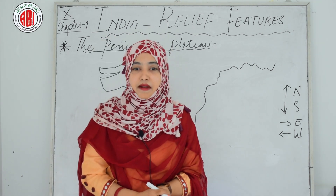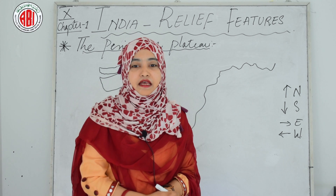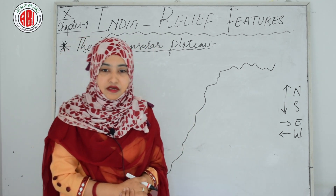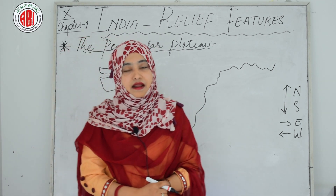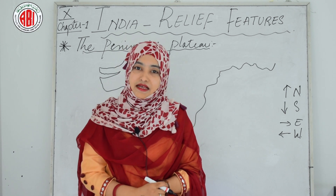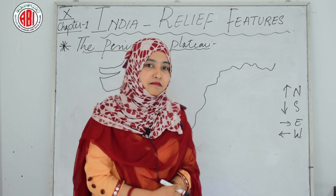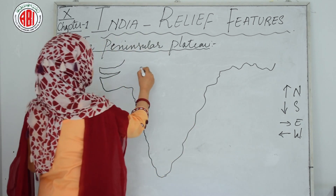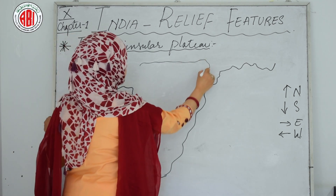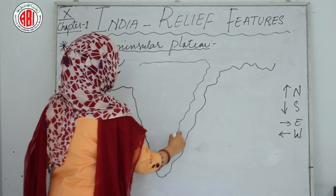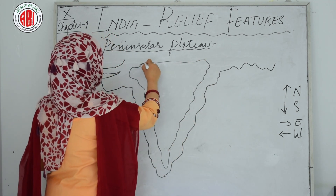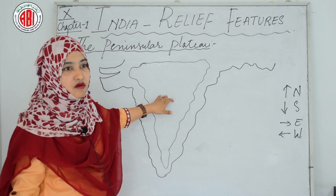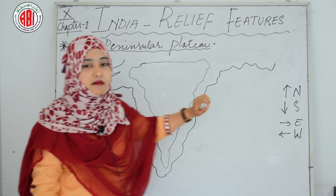The portion of the peninsula plateau lying south of the Narmada is a triangular landmass. It is called the Deccan Plateau. Its triangular shape is why it is called a triangular peninsular land.